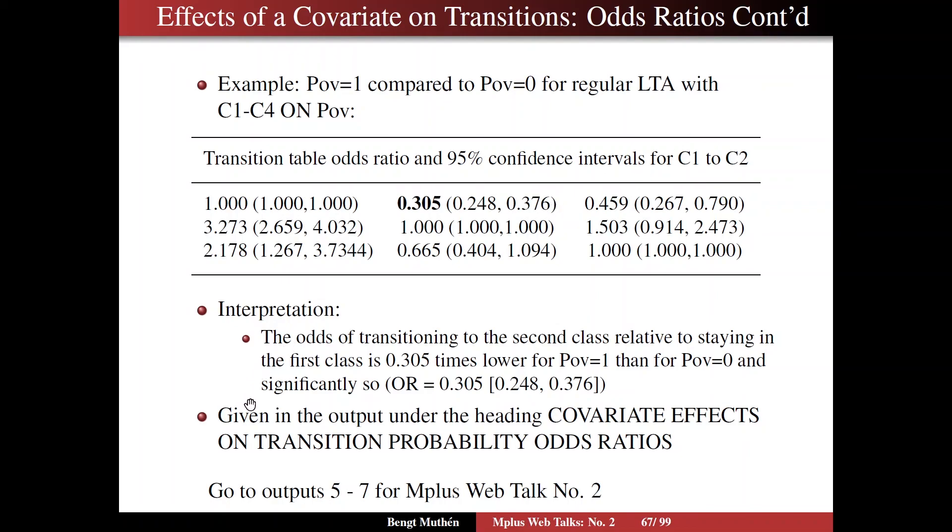So this is given automatically in the output under the heading covariate effects on transition probability odds ratios. So that's a new feature in 8.6, which we felt we needed to add, given many questions about how to think about the effects of covariates on transitions, transition probabilities. And we're going to talk this through in more detail in outputs 5 and 7 for this web talk in the next segment.